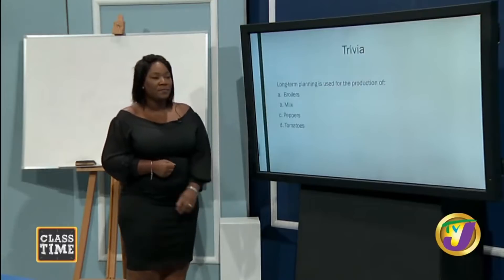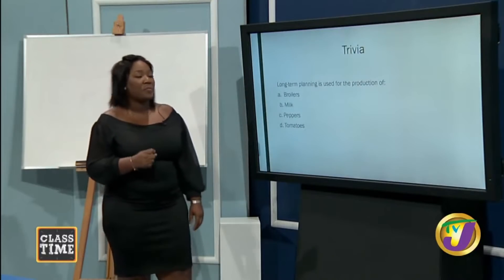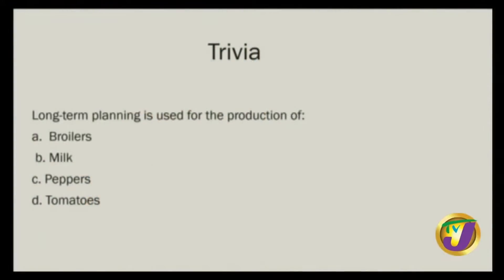Trivia question: long-term planning is used for the production of — A, broilers; B, milk; C, peppers; or D, tomatoes. Which venture would best speak to long-term planning? The answer is B — milk, dairy production. Great.